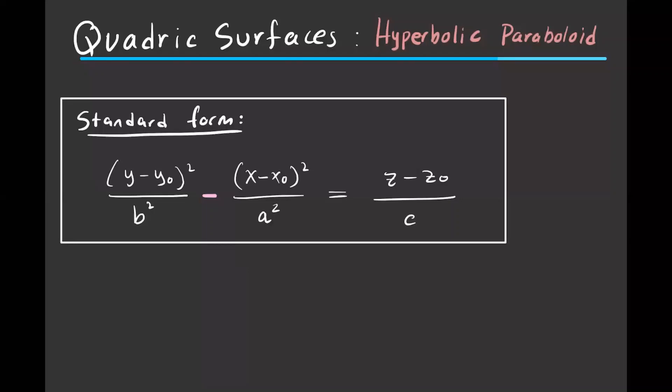The next and last quadric surface we're going to discuss is a hyperbolic paraboloid. This is very similar to an elliptical paraboloid, except we have a minus sign in between the terms that are squared, and this equals one of the variables. That's one way you can identify that it is a hyperbolic paraboloid.